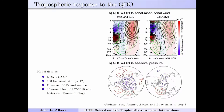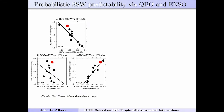What does that look like in sea level pressure? You get a similar pattern, but the contours are only about half a hectopascal — from my perspective, that's a fairly weak effect on its own.